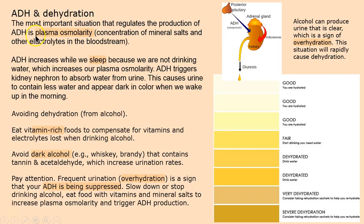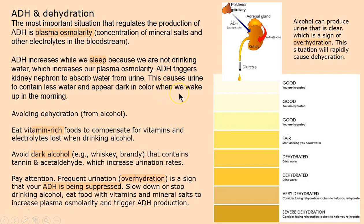It comes down to what's called plasma osmolarity — how many mineral salts and electrolytes are in the bloodstream. Is it really diluted, or really concentrated? Remember hemoconcentration? A good example: when we sleep, that's going to increase our osmolarity because we're not drinking water. So the hypothalamus says, 'Send some ADH — stop this person from peeing, we've got to save every drop.' And you wake up and your urine is dark in color, sometimes with a little odor. That's very typical.